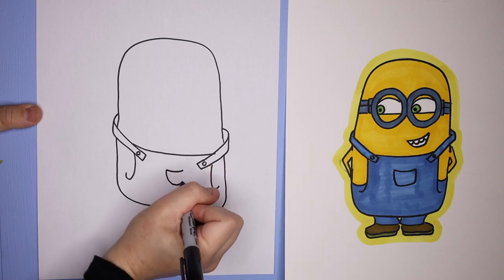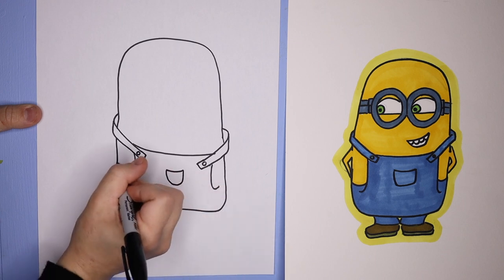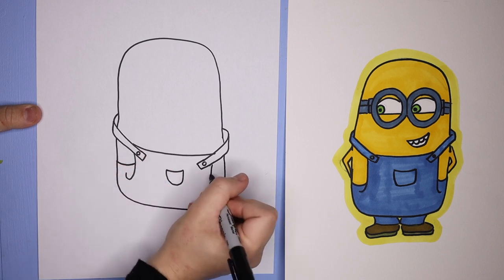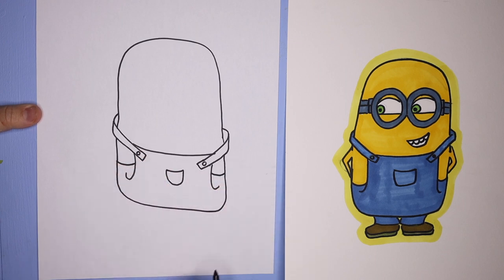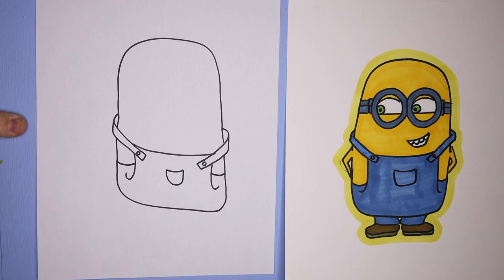Then I added a little pocket. You can add whatever you'd like. Maybe there's a flower in the pocket. And then the sides of the overalls, we're just going to do these two curved lines attaching the J's to the side of the minion body.